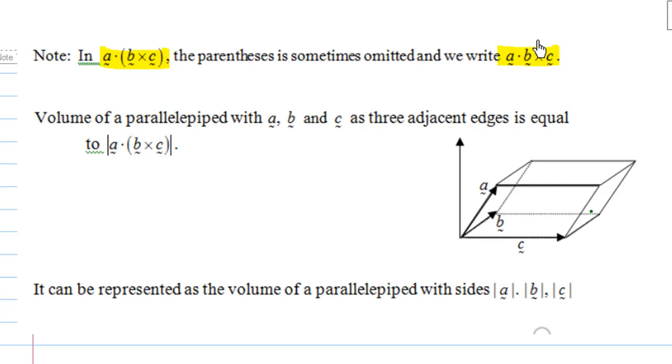If we take the absolute value of a dot b cross c, since we know a dot b cross c is just a number and it can be positive or negative, but if we take the absolute value, what this number means is this is the volume of the parallelepiped with a, b, c as three adjacent edges of the parallelepiped.